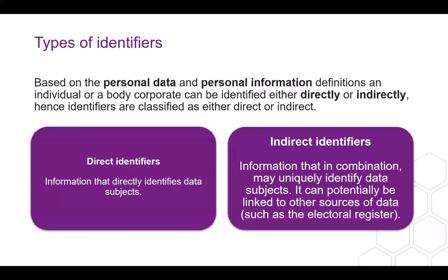Having discussed consent and access levels, let's delve into identifiers. Identifiability is simply being able to distinguish one person from others. Often an individual's name put together with some other information is sufficient to identify them. Identifiers are classed into two main groups: direct — information that directly identifies subjects without any other information needed — and indirect — information that in combination may uniquely identify data subjects.